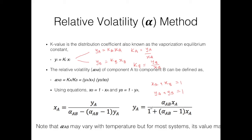Plugging the same alpha constant into the equation gives the relationship between ya and xa. These two equations are equivalent, and in the end you can construct the xy diagram that relates x and y for this two-component system using either equation. Note that this constant may vary with temperature, but for most multi-component systems its value is treated as constant.